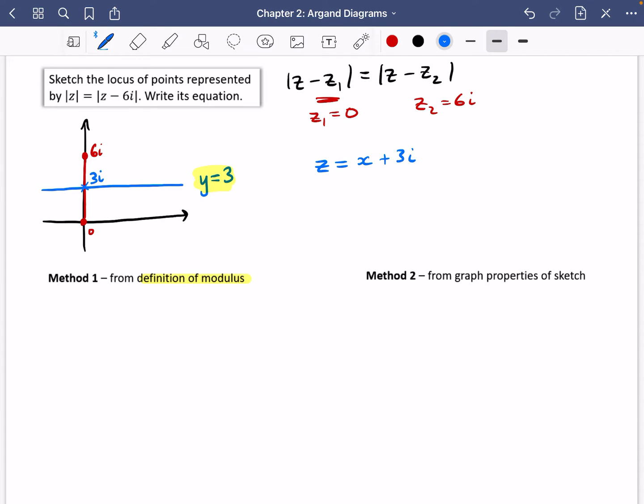We're going to do a slightly longer method here from the definition of the modulus. I don't really like this method that much, but it's still worth having a look at. So we're going to let Z equal X plus iy, which means that the modulus of Z being equal to the modulus of Z minus 6i. That is going to be, let's see if we can go a little bit quicker with this, it's going to be the square root of X squared plus Y squared equals the square root of the X part is going to be just X squared, and because we're going to have the Y minus 6i, it would be a plus Y minus 6 squared.